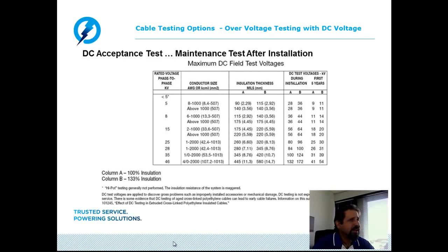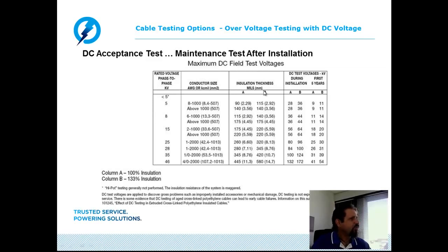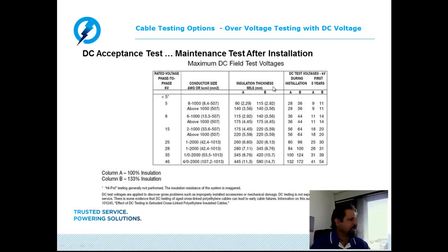DC acceptance tests for installation and acceptance: this chart, taken from Okanite's website, shows that DC is still called out for installation and acceptance testing. It provides guidance on DC voltage levels to apply based on the phase-to-phase kV rating and conductor size. Notice it clearly states for the first five years — meaning after service age or after five years, even Okanite is indicating DC testing should no longer be applied.